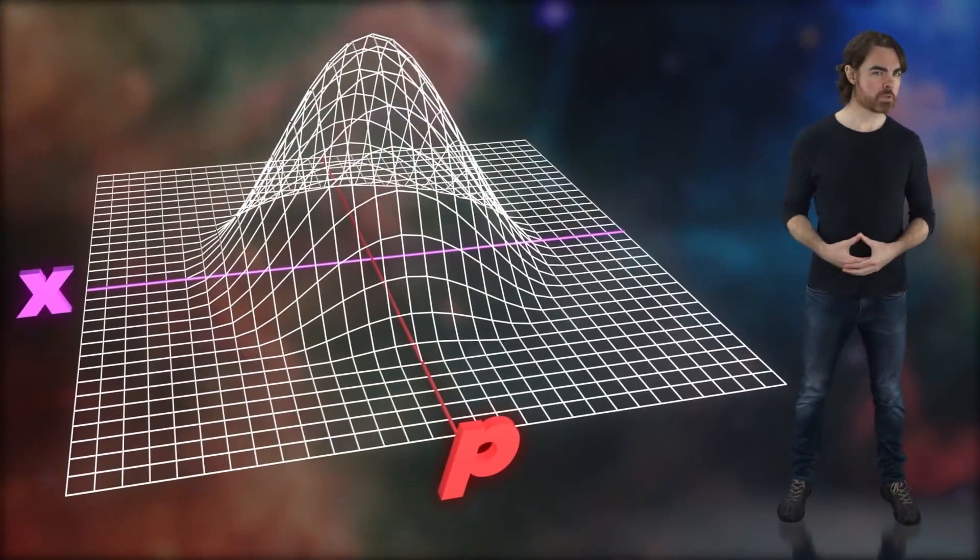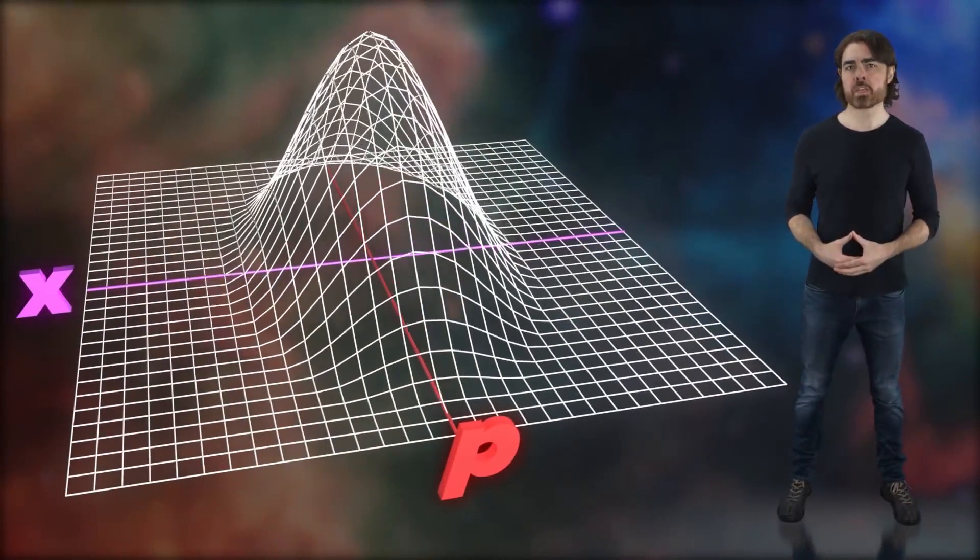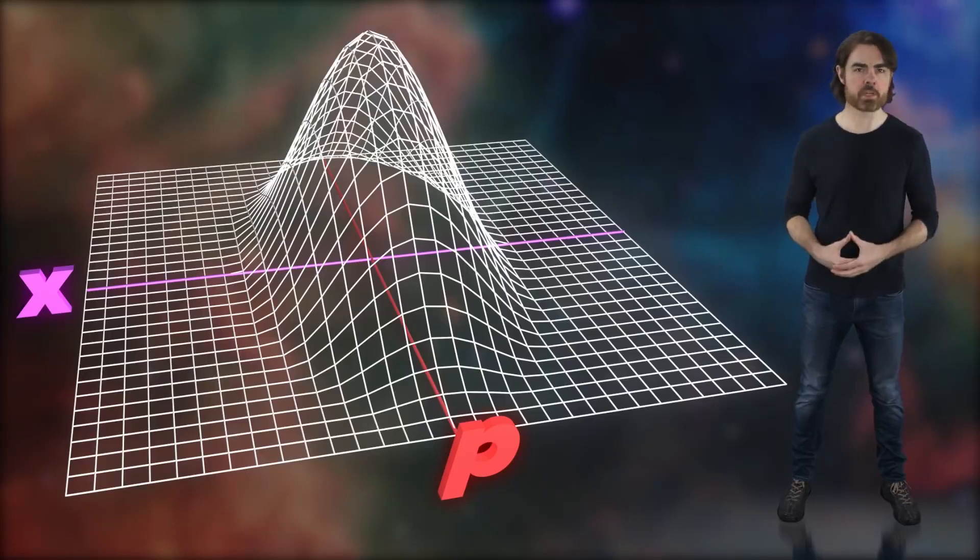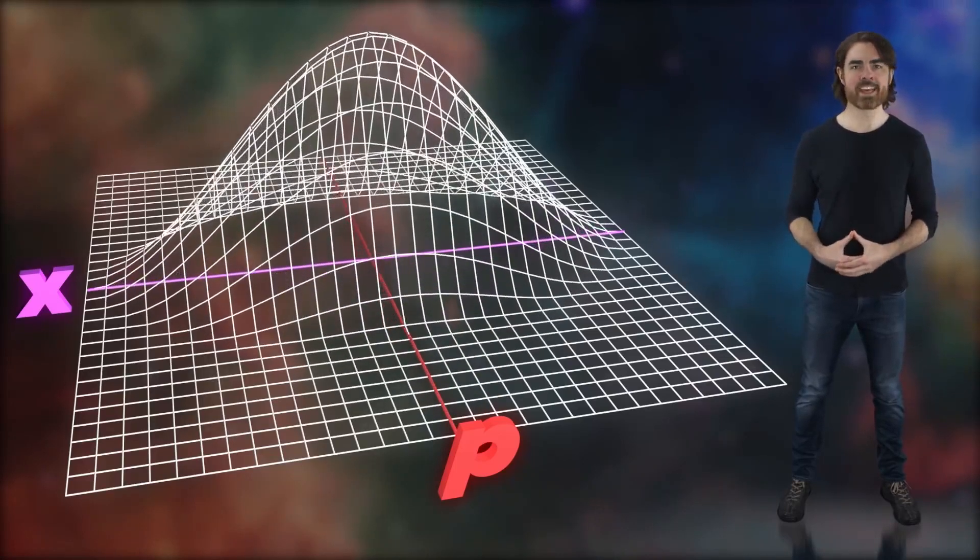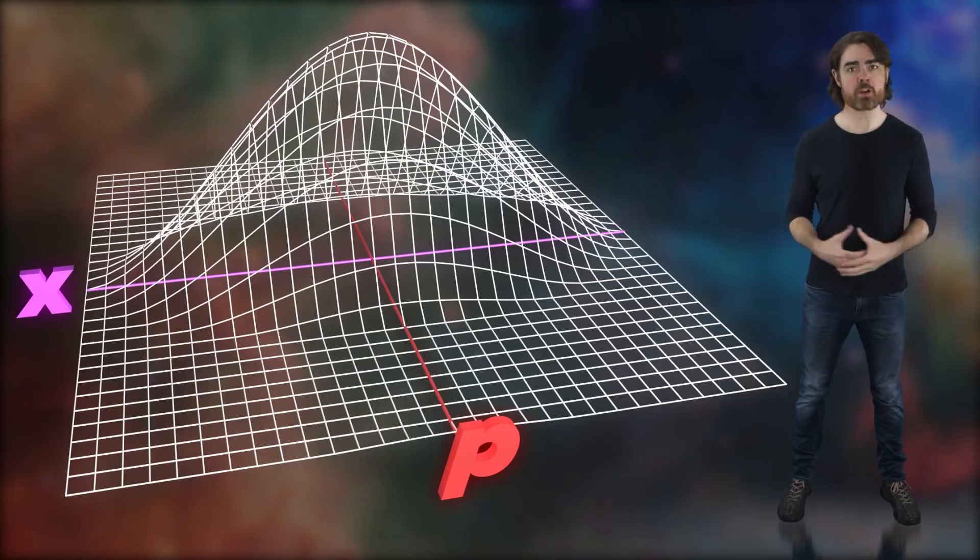So if we measure a particle's position, then from our point of view, its wave function is highly localized in space. We know where the particle is. The resulting particle wave packet, now constrained in position, can only be described as a superposition of waves with a very large range of different momenta via a Fourier transform. The result is a very fat momentum wave function that gives a wide range of possible momenta. The more precisely we try to measure position, the narrower we make its position wave function, and so the less certain we become about its momentum as that momentum wave function gets wider.